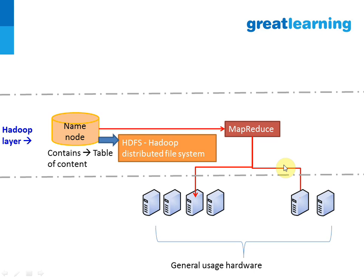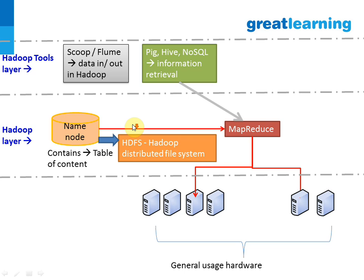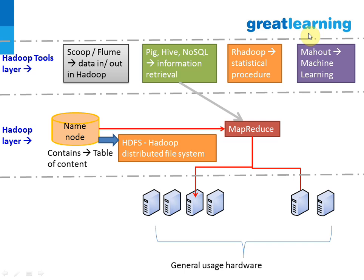Hadoop also provides a set of tools. Scoop or Flume is used for data ingestion and output in the Hadoop system. Pig, Hive, and NoSQL are primarily for information retrieval from the Hadoop system. R-Hadoop is for statistical procedures like regression, correlation analysis, and logistic regression. Mahout is for machine learning tasks.